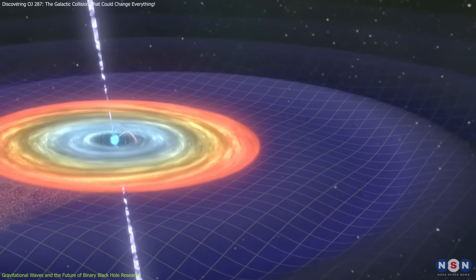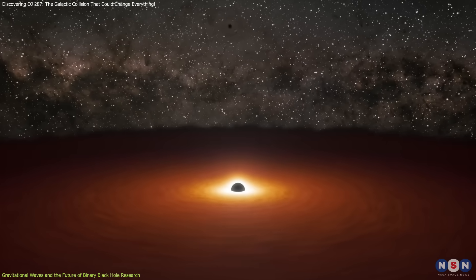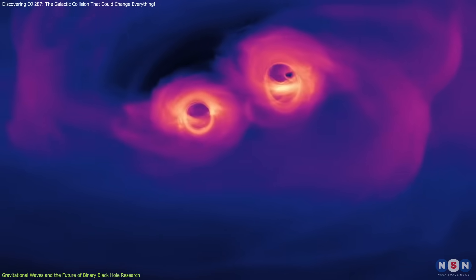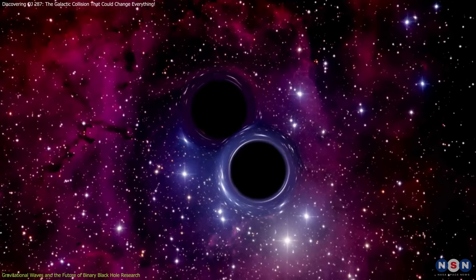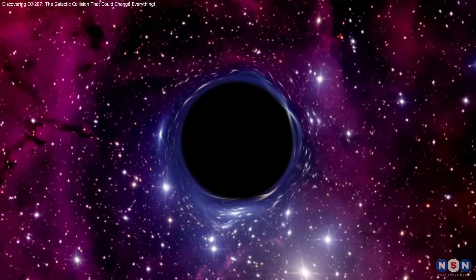Although these waves are faint, they provide a valuable opportunity to study systems that are otherwise out of reach for current detectors. Detecting gravitational waves from OJ 287 would reveal how black holes evolve and, when they merge, produce a powerful burst offering rare insights into cosmic forces.